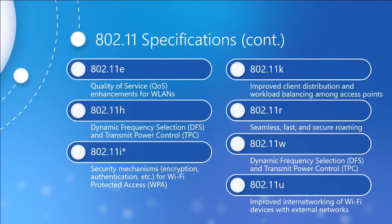802.11k focused on better management of the radio frequency spectrum, helping access points better distribute their client workload. 802.11r — think 'r' for roaming — redefined how clients quickly and securely roam amongst access points. 802.11s is the integrity group temporal key (IGTK) to protect broadcast traffic at the MAC layer. Finally, 802.11u defines mobile communications for devices to join a wireless LAN anywhere — something we'll circle back to down the road.